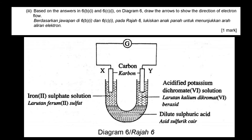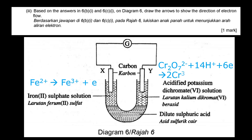Based on the answers in 6B1 and 6C1, draw an arrow on Diagram 6 to show the direction of electron flow. For iron(II) sulfate, iron(II) ion releases one electron to form iron(III) ion. At electrode Y, chromium ion receives six electrons. Since iron(II) ion releases electrons, electron flow is from electrode X to electrode Y — draw the arrow accordingly.